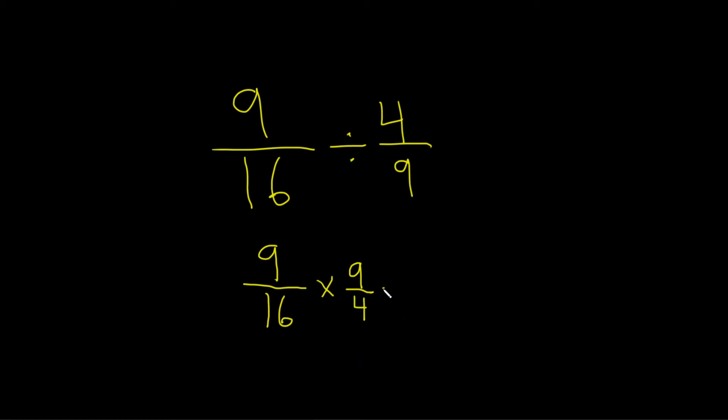All right, so now we'll go ahead and multiply. 9 times 9 is 81. Just multiply straight across. 16 times 4 is 64.